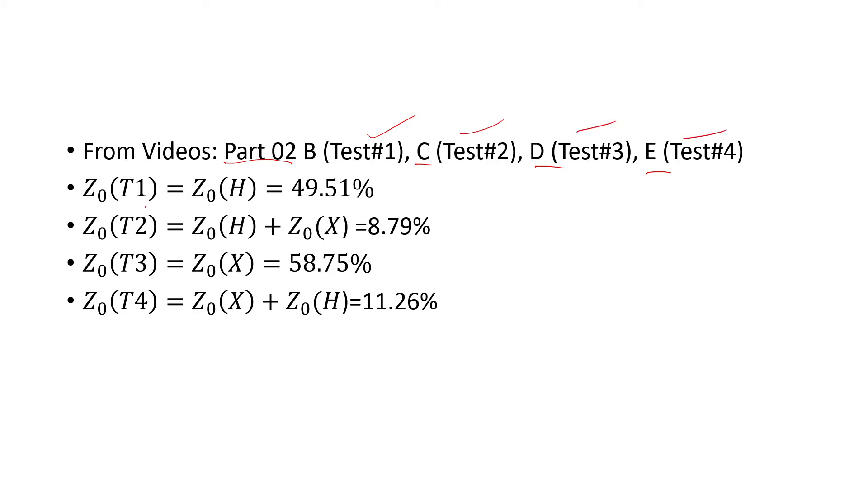and test 4, which I'm going to summarize here. So test 1 was 49.51%, test 2 was 8.79%, test 3 was 58.75%, and test 4 was 11.26%.